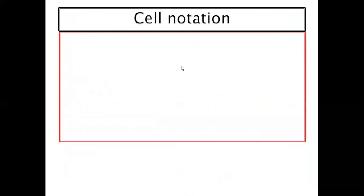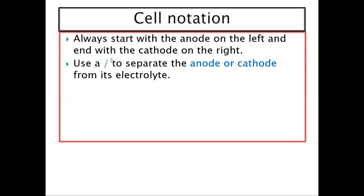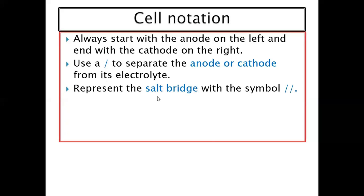Now let's look at cell notation. When writing cell notation, always start with the anode (negative) on the left and end with the cathode (positive) on the right. Use a single forward slash ( / ) to separate the anode or cathode components from their electrolytes. Use a double forward slash ( // ) to represent the salt bridge.